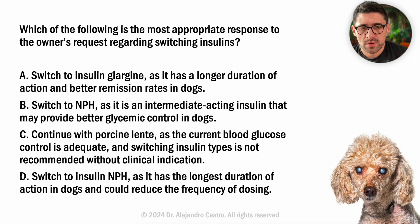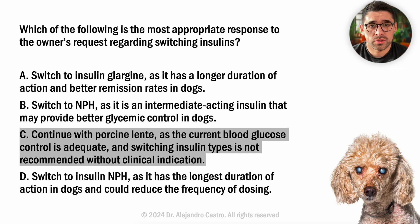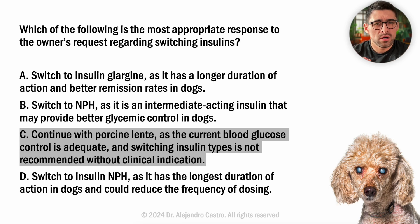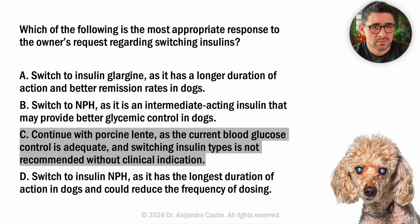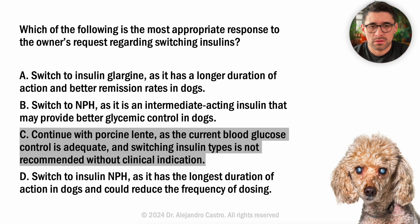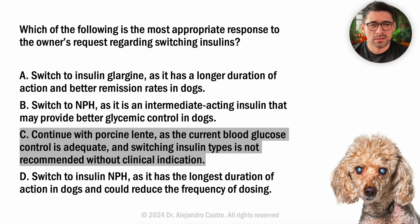Let's break this down. The correct answer is C — continue with the current insulin regimen. The dog's blood glucose is well controlled and there's no indication of hypoglycemia, so we don't really need to change it right now. Remember the golden rule in diabetes management: if it isn't broke, don't fix it. Switching insulin without a clinical indication can create unnecessary complications.